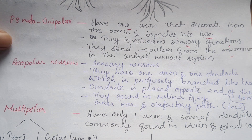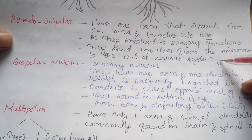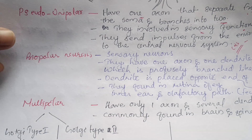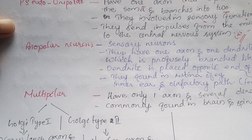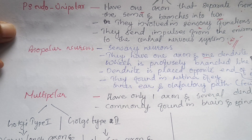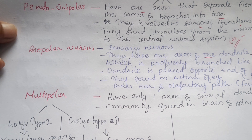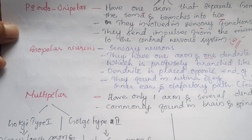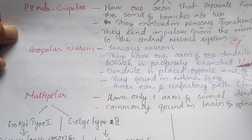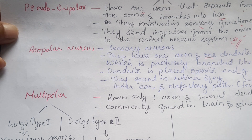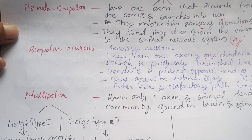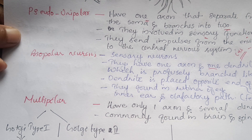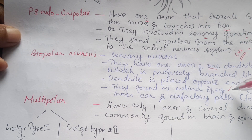Bipolar Neurons have one axon and one dendrite. The dendrite branches like a tree and is placed at the opposite end of the soma. These neurons are found in the retina of the eye.